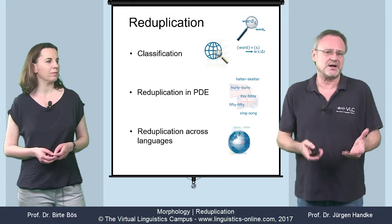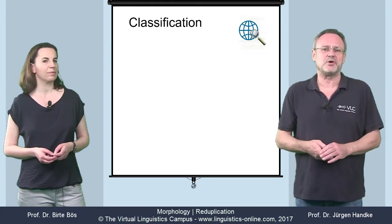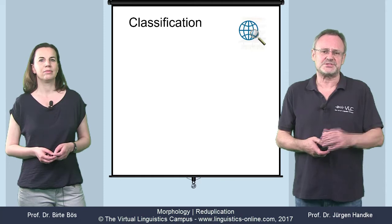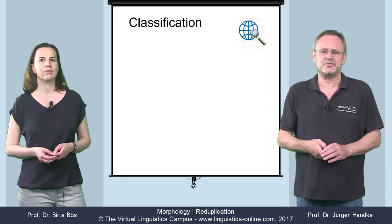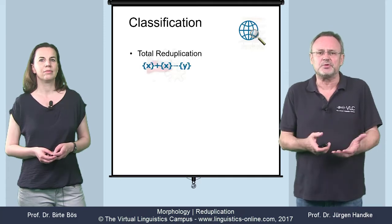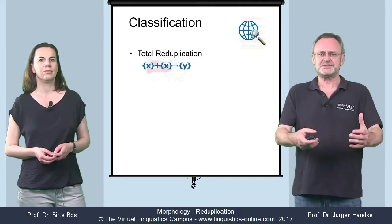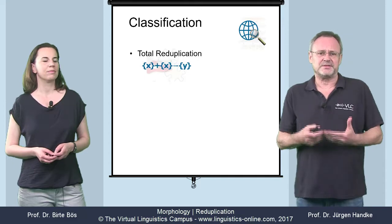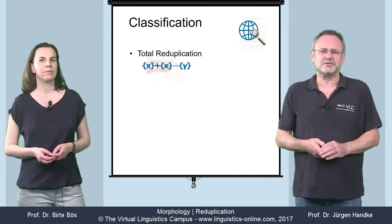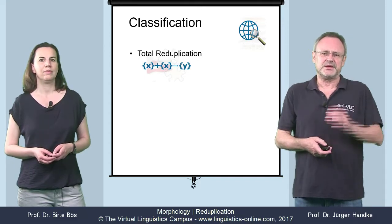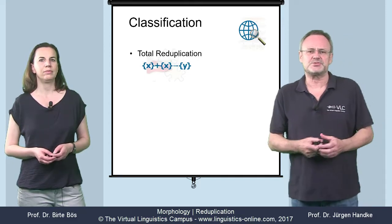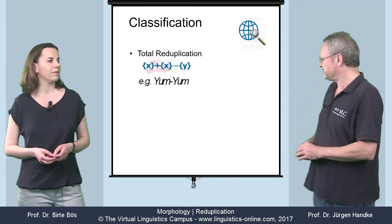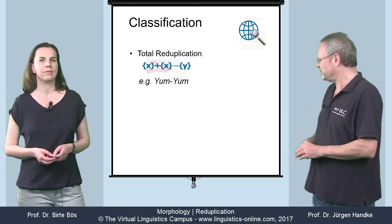Let's start with types of reduplication. The most obvious type is referred to as total reduplication — that is, we have an operation where the entire base form is repeated. Here are two examples of simple doubling from present-day English: yum-yum and wee-wee.